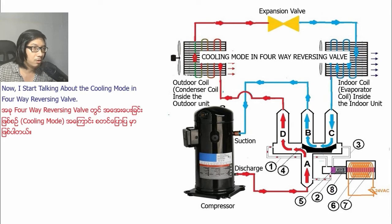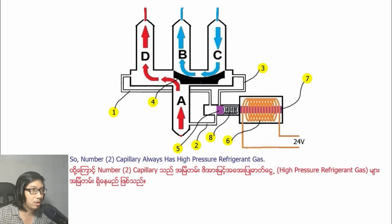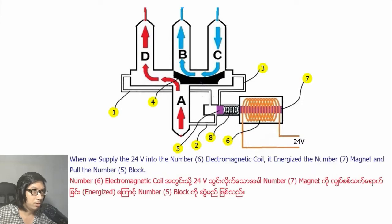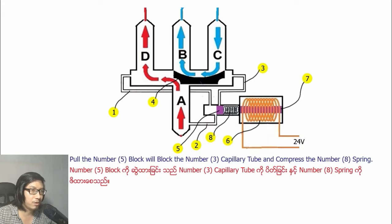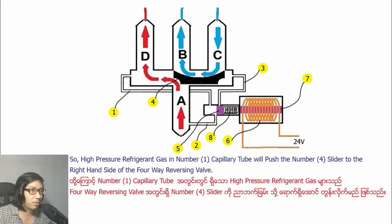Now I will talk about cooling mode in the four-way reversing valve. Capillary tube number two is always connected to port A, so capillary tube number two always has high-pressure refrigerant gas. When we supply 24 volts to the number six electromagnetic coil, it energizes the number seven magnet and pulls the number five block, blocking capillary tube number three and compressing the number eight spring.